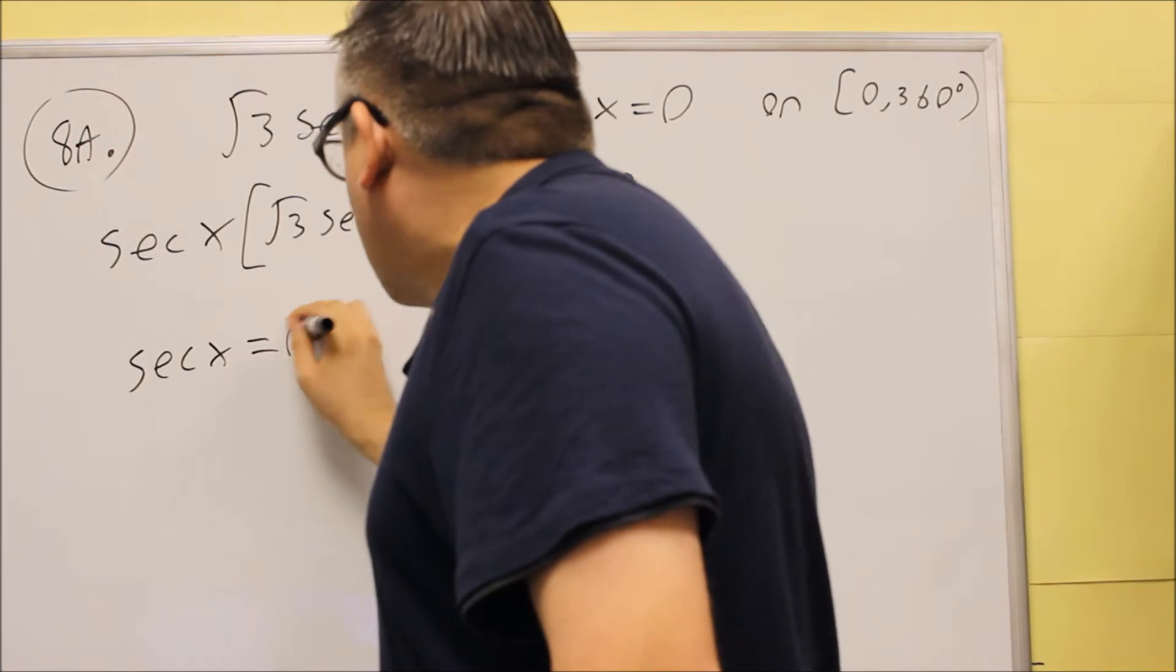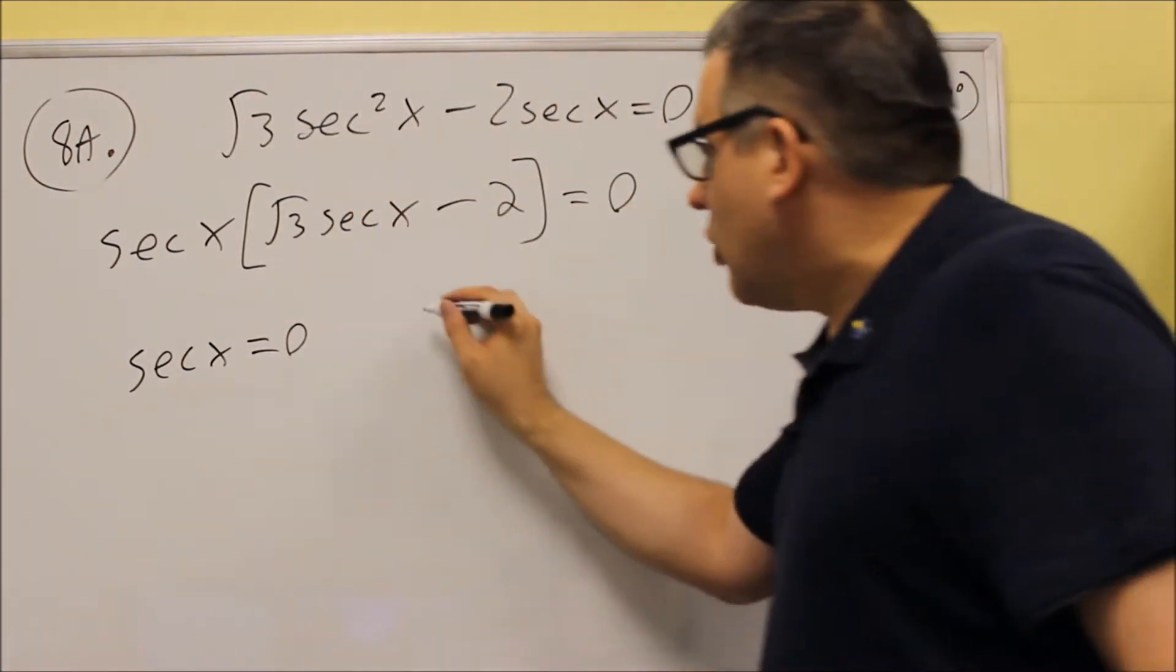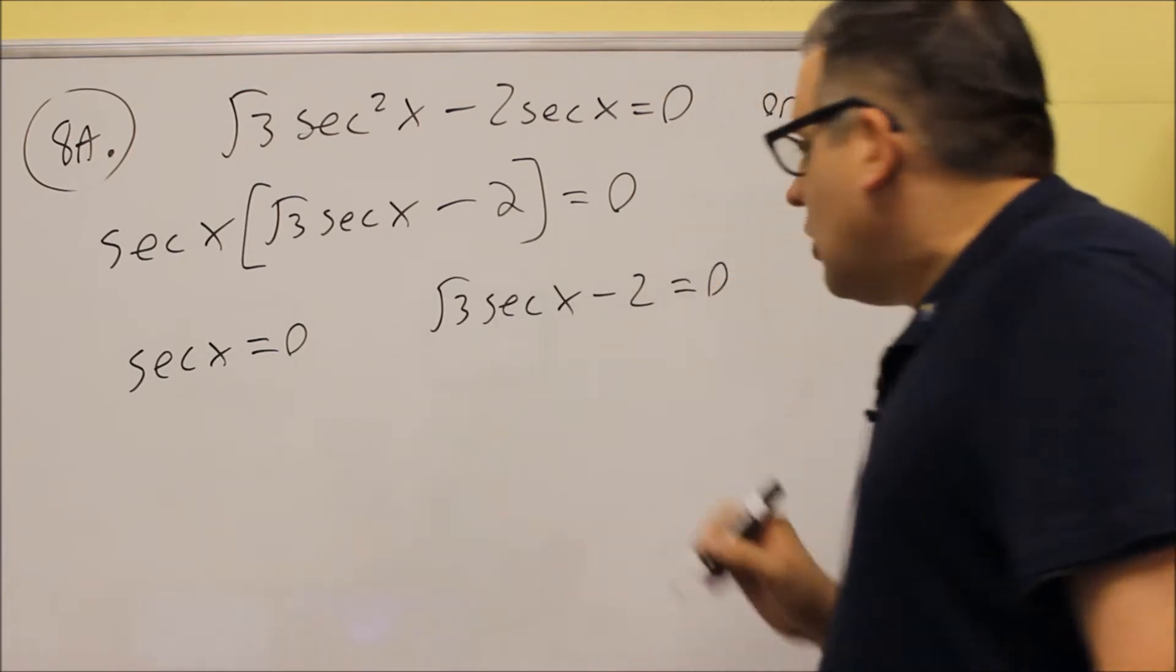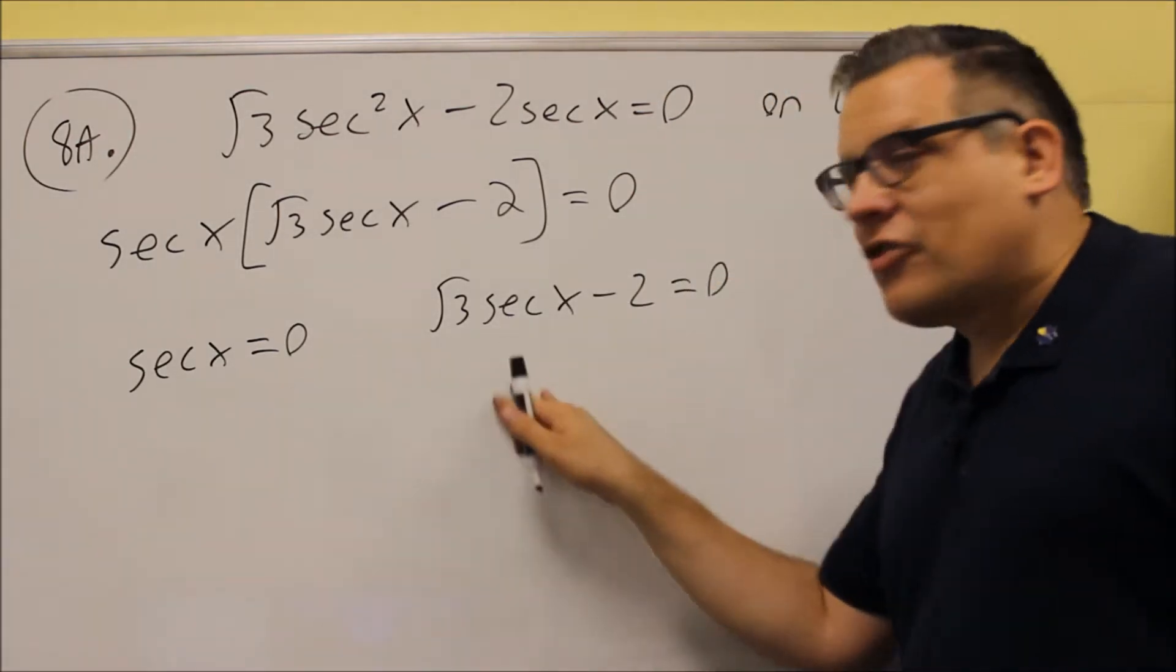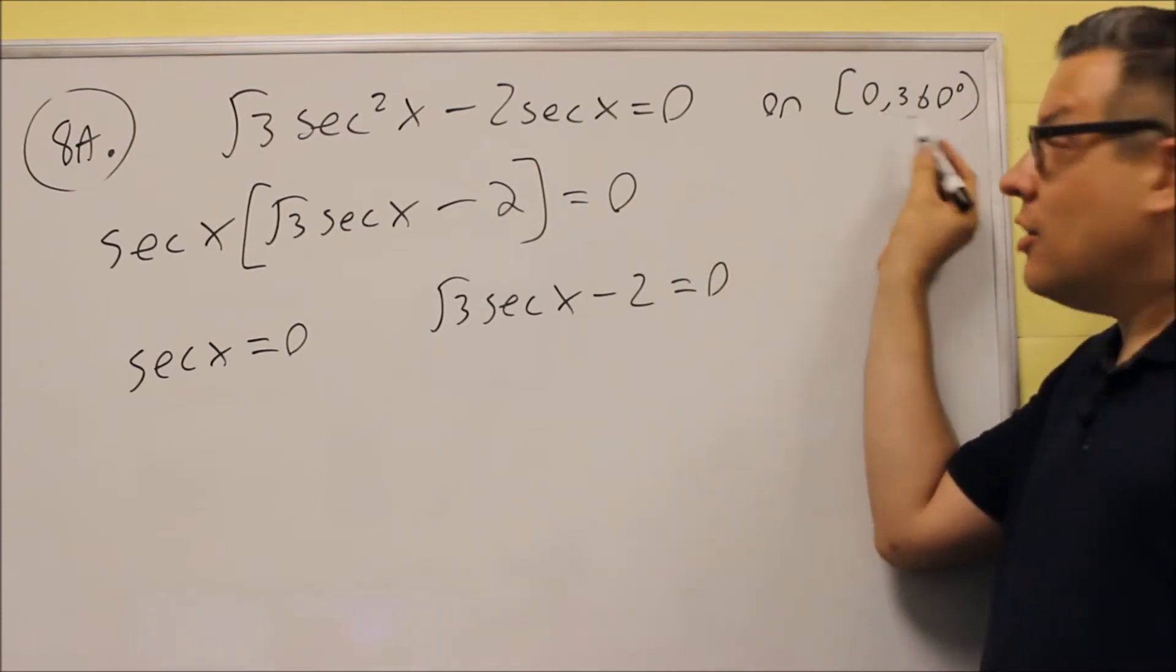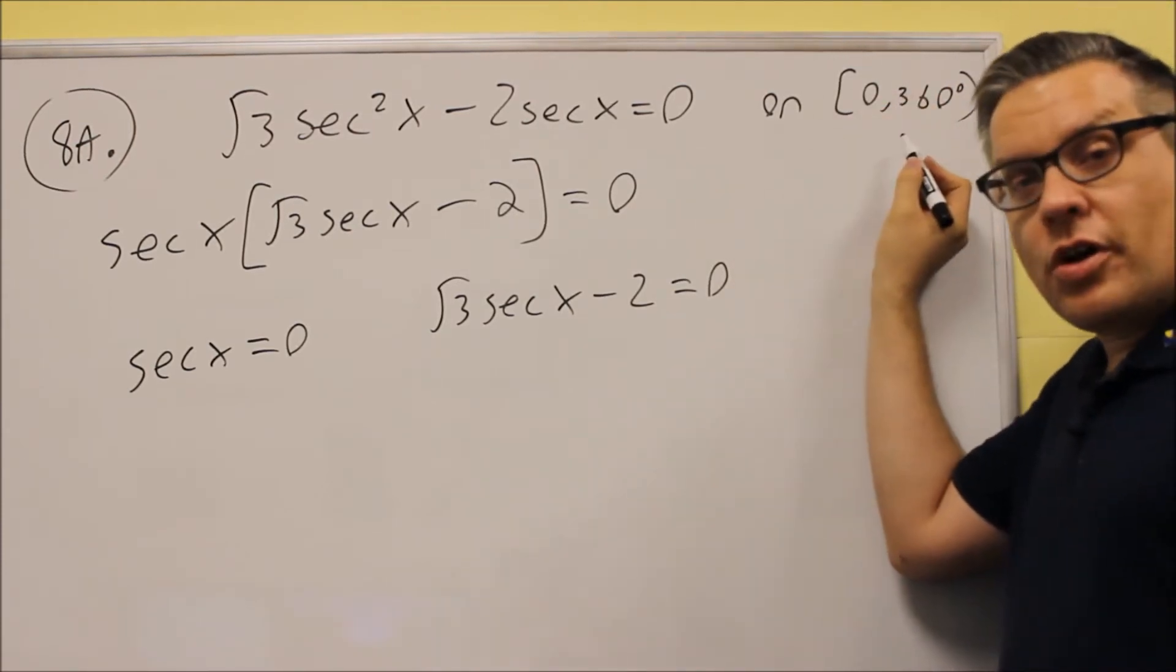So first one, secant x, I am going to set that equal to zero. Second one, square root of three secant x minus two, we will set that equal to zero. And we are going to solve each of these individually, and our answers need to be in degrees because they give you this statement up here.